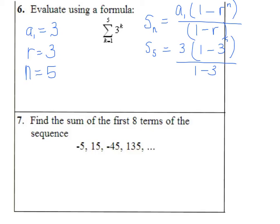To evaluate this, put it in your calculator: first compute 1 minus 3 to the fifth power, hit enter, multiply that by 3, hit enter, and divide by negative 2. When you do that, you get the answer 363.